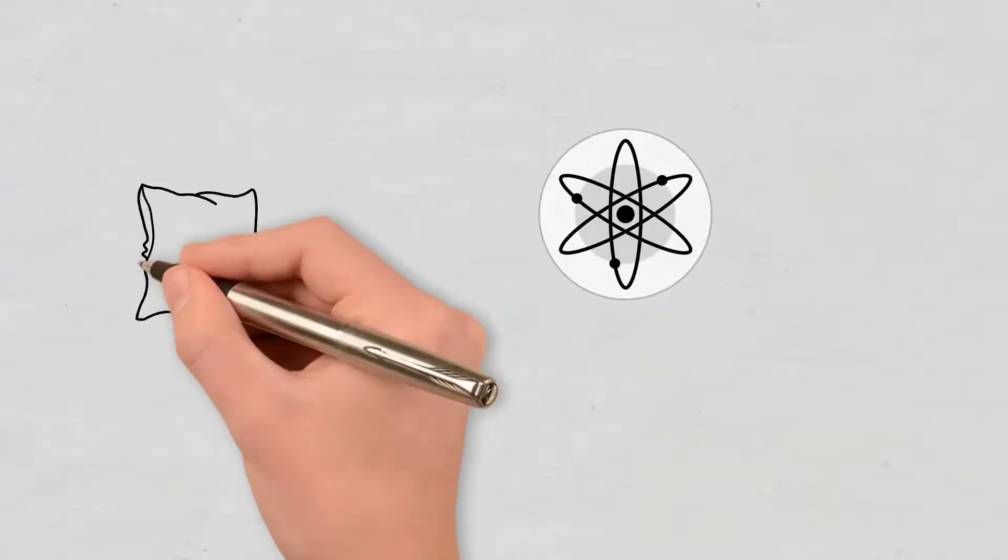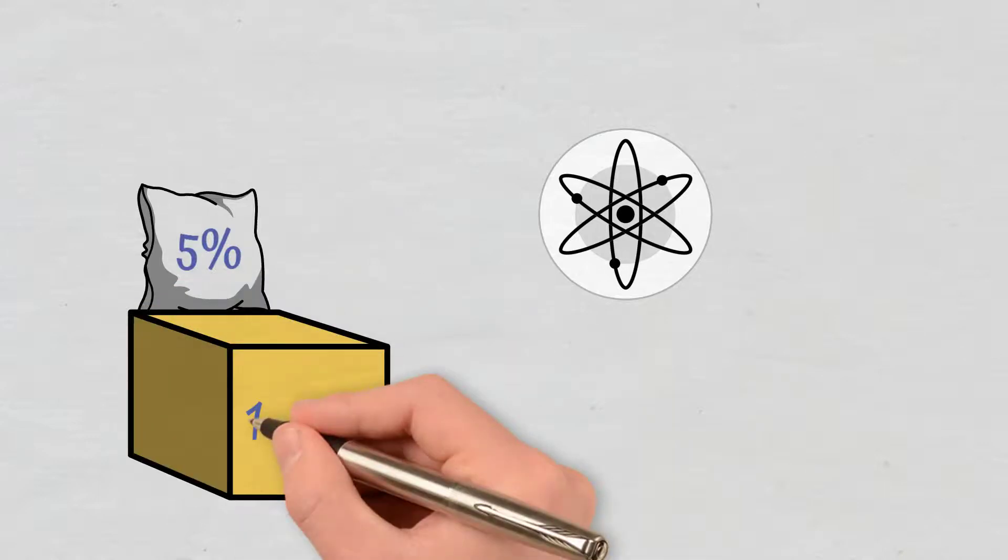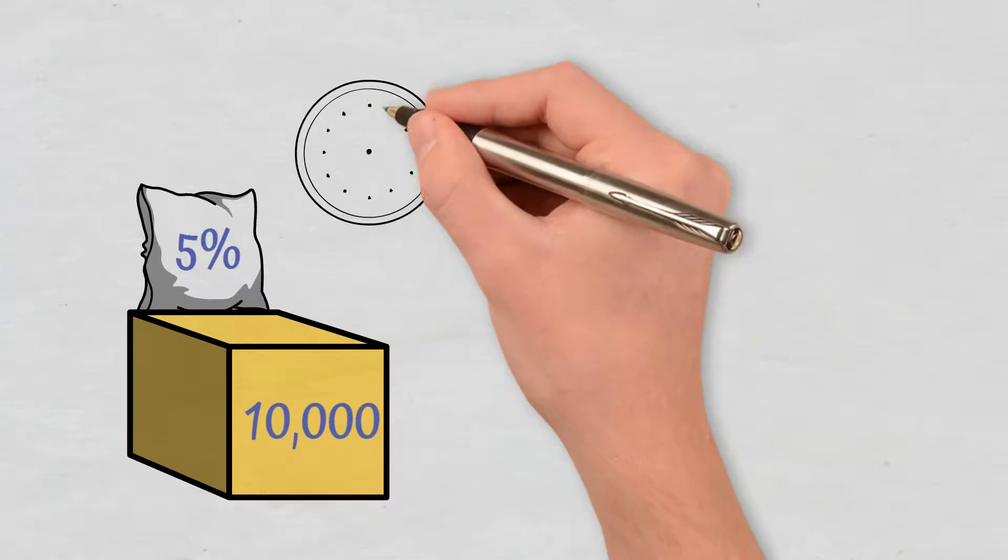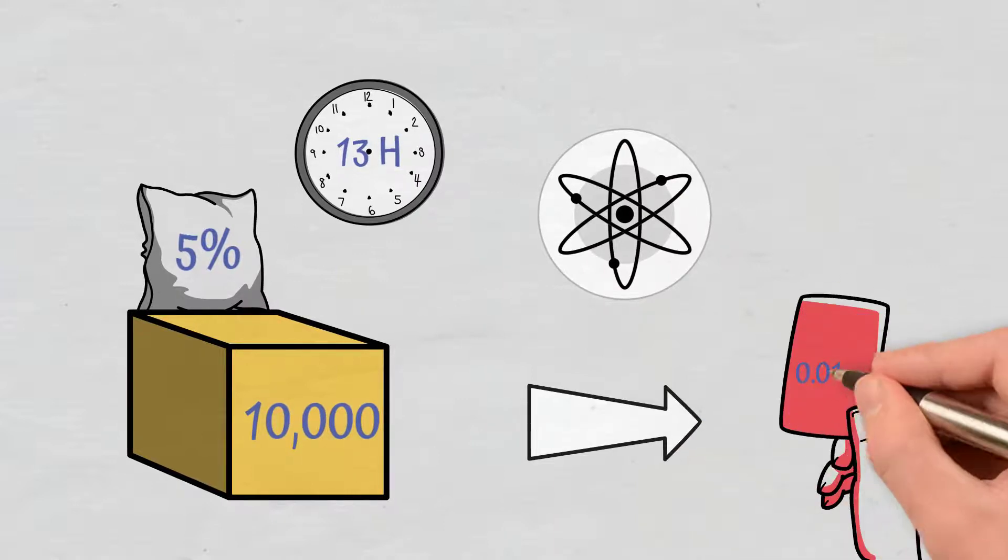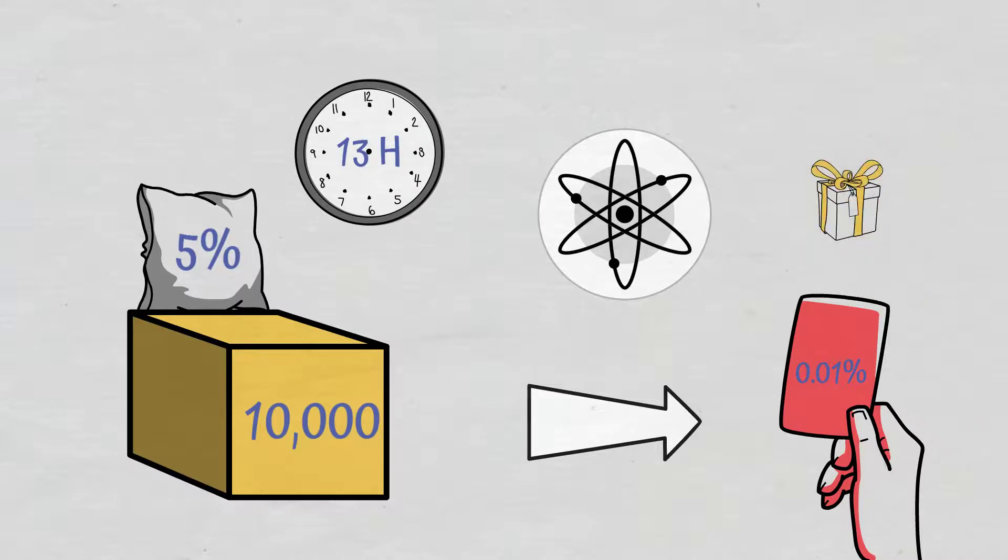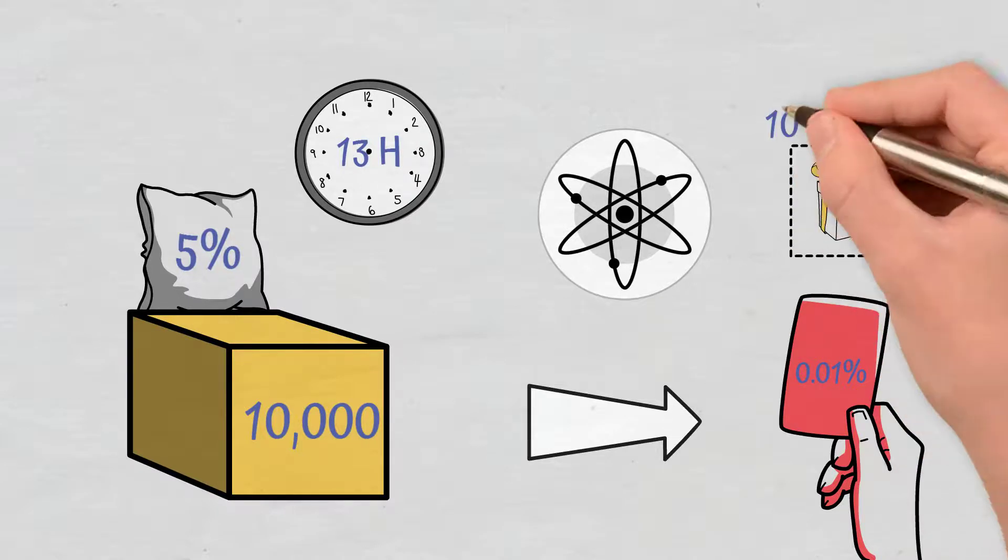For example, in the case of Cosmos, if a validator is down for more than 5% of the last 10,000 blocks, that is, it is offline for more than 13 hours, the slashing amount is 0.01%. Moreover, the validator is also removed from the consensus and does not earn rewards for at least 10 minutes.